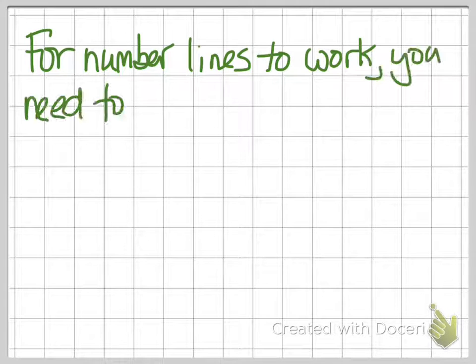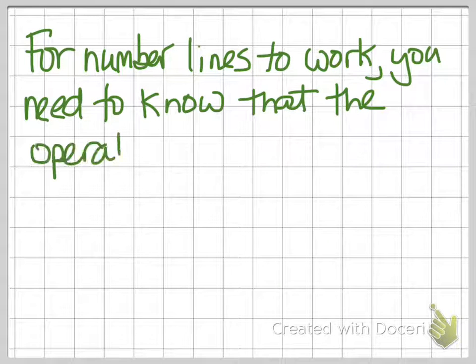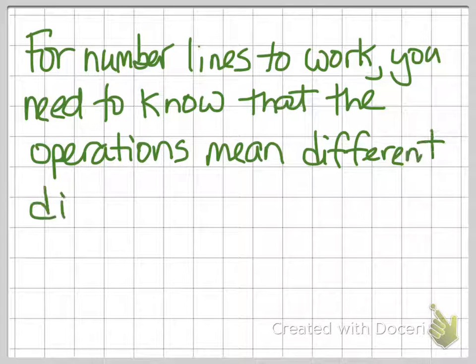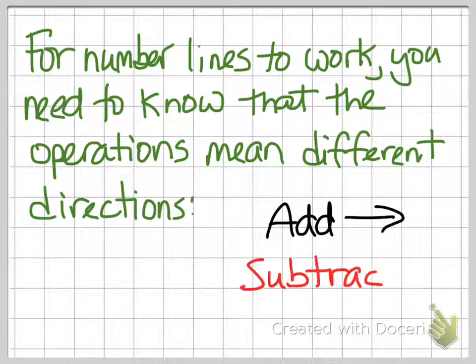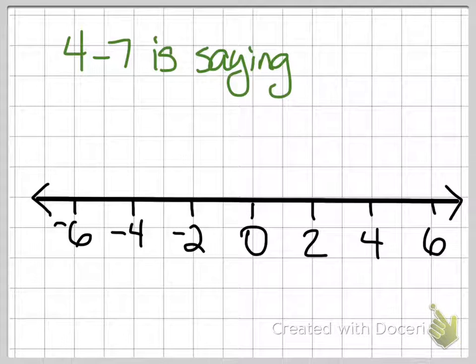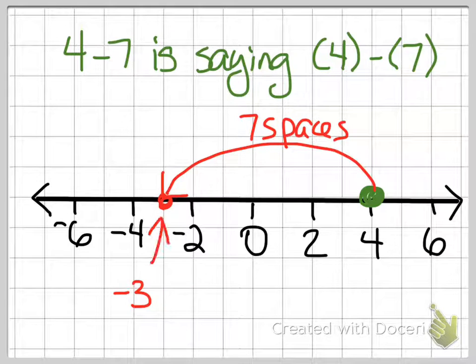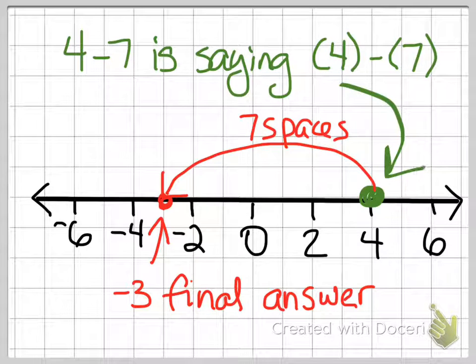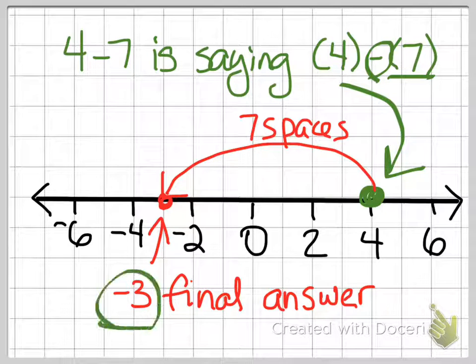For number lines to work, you need to know that the operations of addition and subtraction have to go with different directions. Adding always goes to the right, and subtraction always goes to the left. So, look at this number line and look at the equation. 4 minus 7 is saying 4 minus 7. The first number tells you where to start. The second number tells you how many places to go. And the operation tells you what direction. So, 4 minus 7 ends at negative 3, which is my final answer.